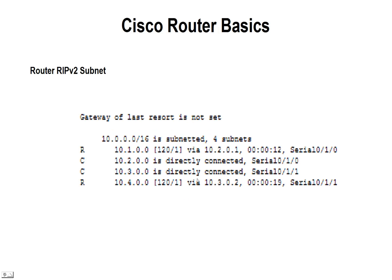Here, if we look at our IP route — this is our routing table — we now have network 10.1 on the first network, and also 10.4 on the last network, that have been added to router 2's routing table.